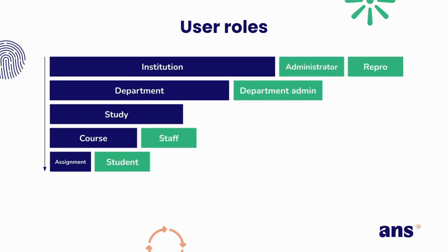The next step is to look into the user roles tied to the levels of the system architecture. At the top we have the administrators, making sure that everyone is added to the platform as part of the institution, and that the settings and integrations — like lockdown browsers or proctoring services — are installed for the entire institution. Next to the administrator you also have the repro, who is responsible for printing and scanning the written assignments. One level below we have the department admins, who have less rights than the administrators but can see and do everything within their own department.